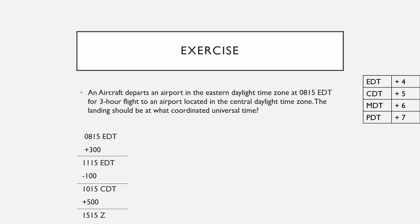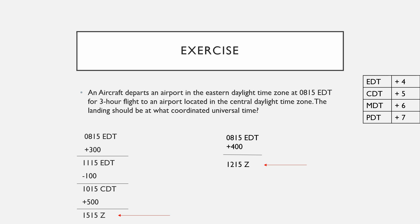I would also like to show you how to convert the departure time to Zulu, since you must enter it in the flight plan as well. Our departure time is 0815 EDT. Looking at our chart, the number next to EDT is 4, meaning we add 0400. Adding 0400 to 0815 gives us 1215 Zulu. So our departure time in Zulu is 1215Z and our arrival time in Zulu is 1515Z.